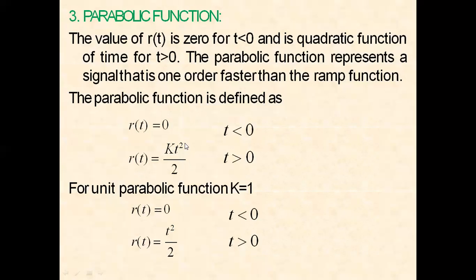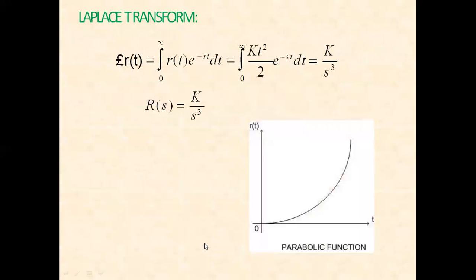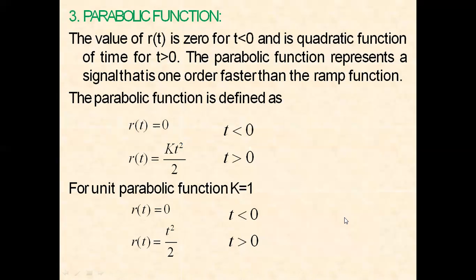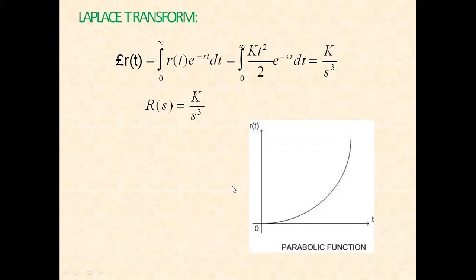Looking at the parabolic function graph: the power of t is two and the power of r(t) is one. Since the power of t is higher, the graph moves or rotates towards the direction of the lower power of r(t). This is an easy way to understand and draw the parabolic function — the graph rotates toward the lower power side.